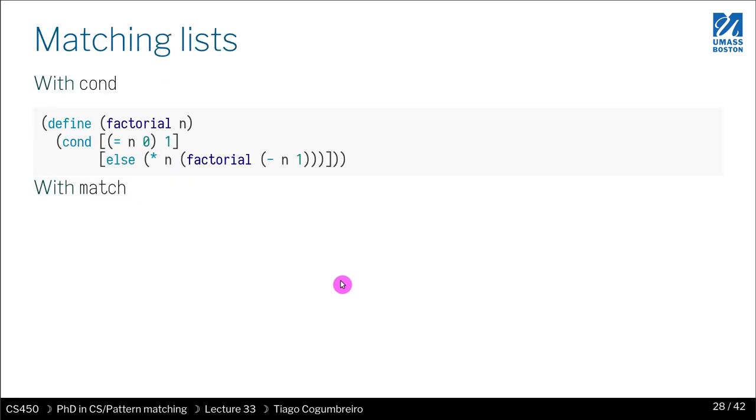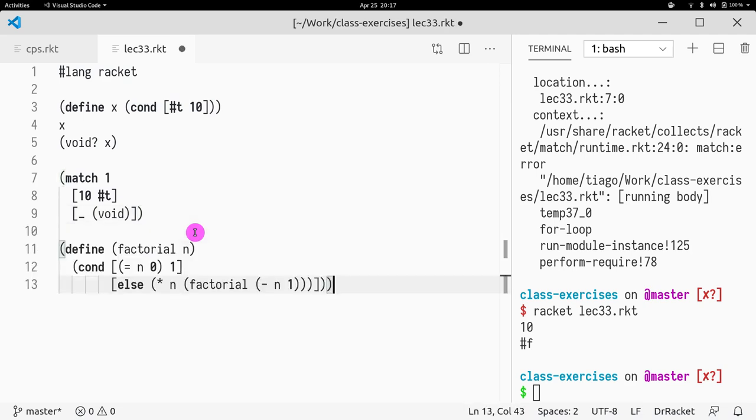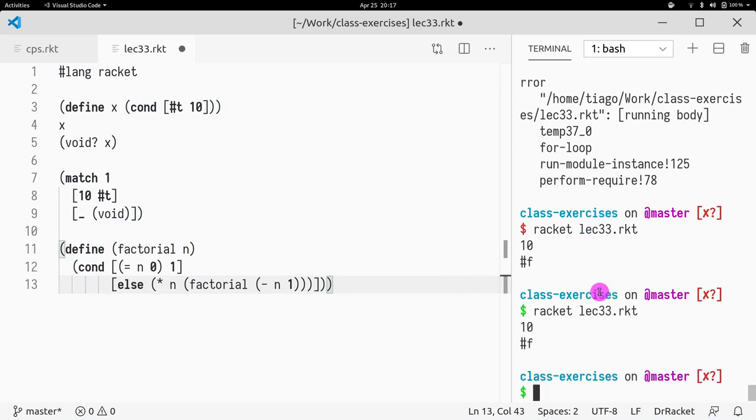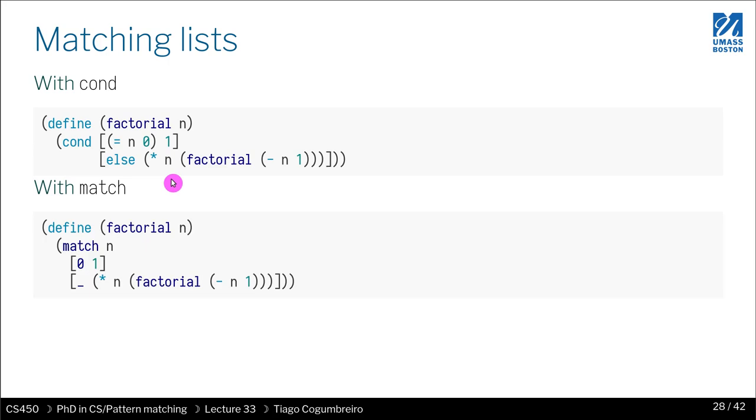One thing that is way more interesting is let's say you want to write factorial and this is a typical function defined by branches, right? One way is you define it and you write a conditional. So nothing too surprising here. If I write factorial of three, I get six because it's three times two times one.